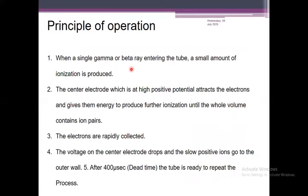When a single gamma or beta ray enters the tube, a small amount of ionization is produced. The central electrode, which is at high positive potential, attracts the electrons and gives them energy to produce further ionization until the whole gas volume contains ion pairs. The electrons received by the anode travel through the circuit to the cathode, where they are discharged, and the positive ions become neutral again, ready to receive another radiation. The electrons are rapidly collected, the voltage on the central electrode drops, and the slow positive ions travel to the outer wall. After about 400 microseconds, the tube is ready to repeat the process.